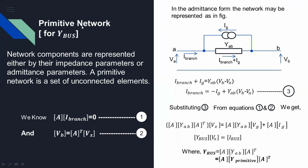The primitive network topics are very important for calculating the Y-bus matrix. Another method of Y-bus matrix calculation is the singular transformation method. For the singular transformation method, we require a formula obtained from the incident matrix and the Y primitive matrix. Network components are represented either by their impedance parameters or admittance parameters. A primitive network is a set of unconnected elements. This is the primitive admittance network.